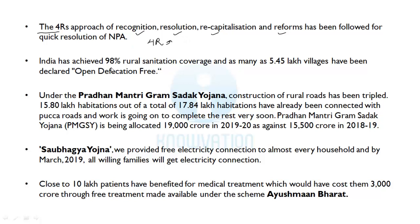India has achieved 98% rural sanitation coverage and as many as 5.45 lakh villages have been declared open defecation free, which we call ODF. From the Swachh Bharat Abhiyan that the NDA government started, almost 98% rural sanitation has been achieved. You can quote these figures, so note them down.